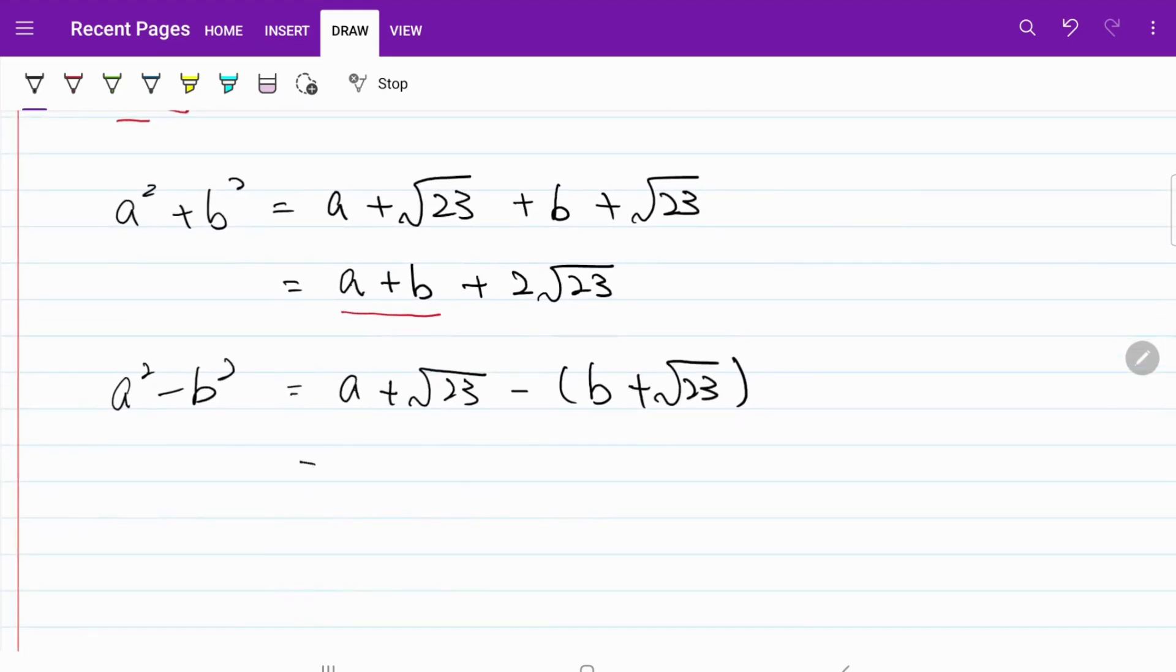From there, that's equal to a + √23 - b - √23. And the square roots will cancel each other, so what I'm left with is a² - b² = a - b.